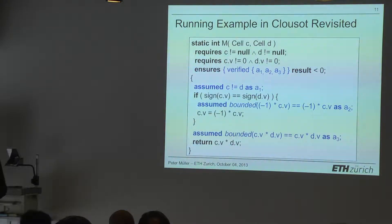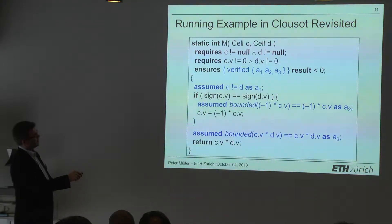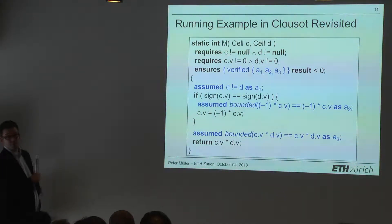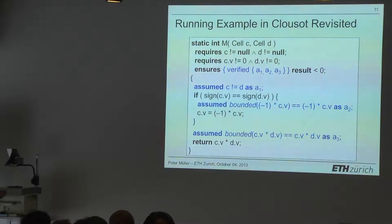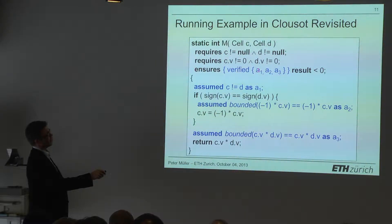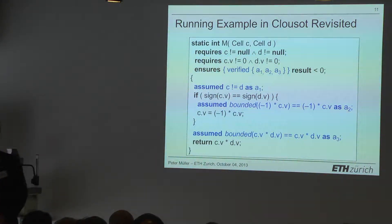Back to our running example with the encoding for how Clouseau analyzed the program. We have three assumptions: A1 — Clouseau assumed C and D are different in the input state; A2 — no overflow in the first multiplication; A3 — no overflow in the second multiplication. Clouseau then emits one element in the set V for the postcondition assertion — one verification attempt using A1, A2, and A3. So if all three assumptions hold, the method is correct; if one is violated, it might not be.